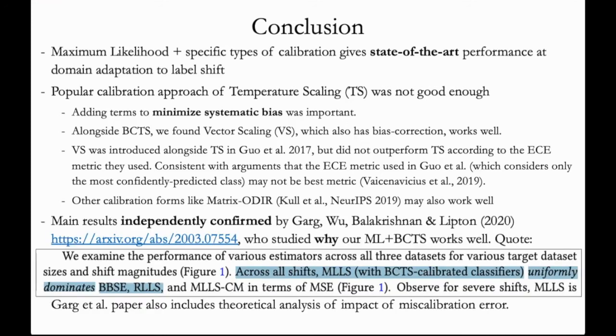Encouragingly, the main results were independently confirmed by Garg, Balakrishnan, and Lipton in a paper that studied why our recommended approach works well. As a quote from that paper, they found that max likelihood label shift with our proposed BCTS-calibrated classifiers uniformly dominates over BBSE and RLLS. And that paper also includes a theoretical analysis of the impact of miscalibration errors, so we encourage readers who are interested in theory to take a look. Thank you for listening, and I hope you enjoyed this presentation.